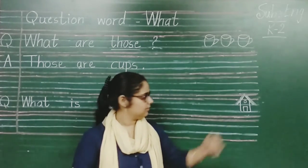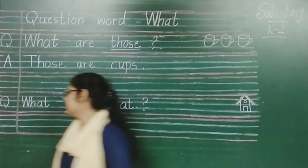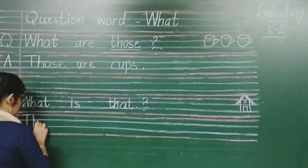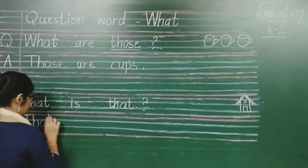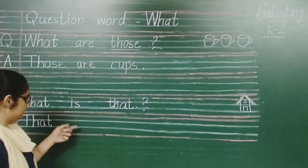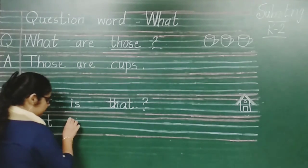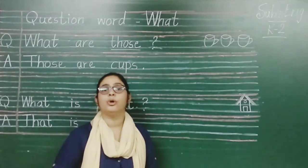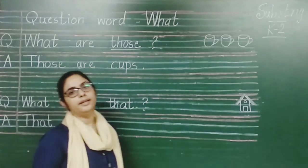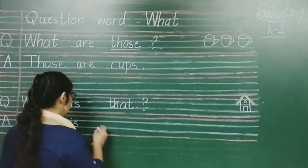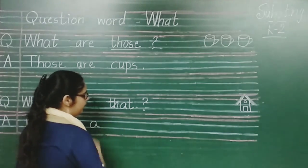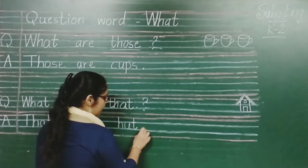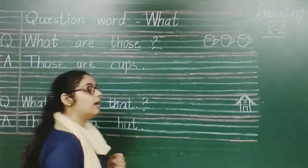Here we will write answer. So first term kya kareenge? That. Likhenge hai haapte but first letter should be capital. T h a t that. Is hai tu is likhenge. Now here's only singular term is there, so we have to add articles also. Hut. Hut starts from h so term kya hussarheenge? A. Article a. A and here we will write answer hut. H u t hut and full stop. That is a hut.